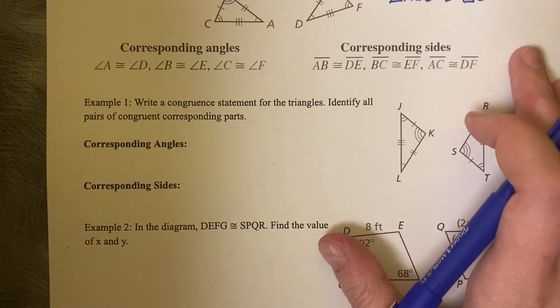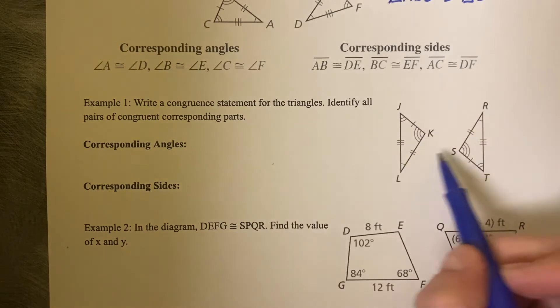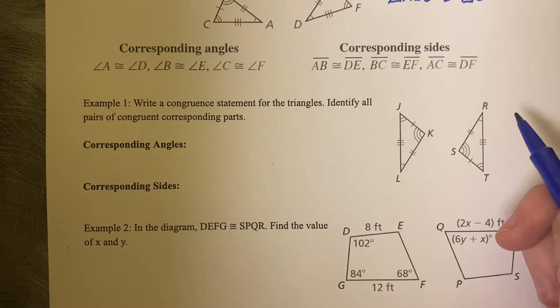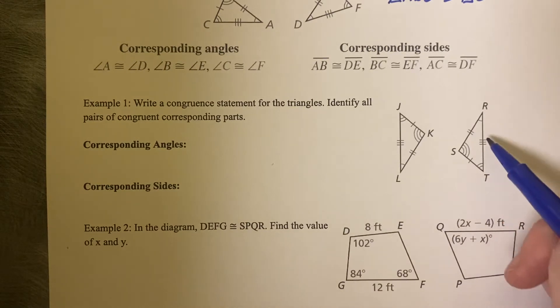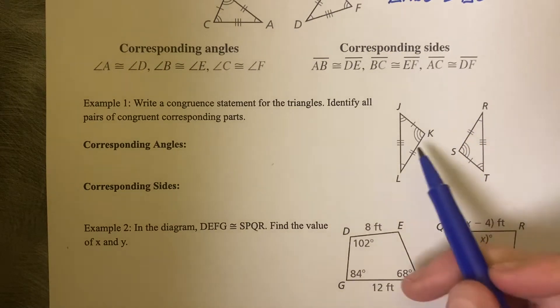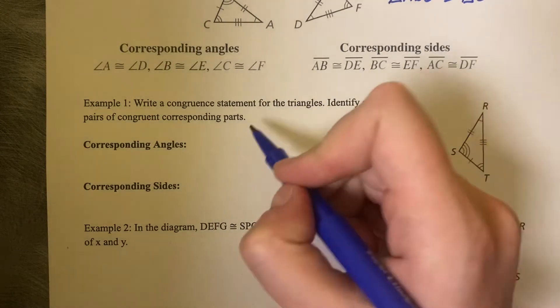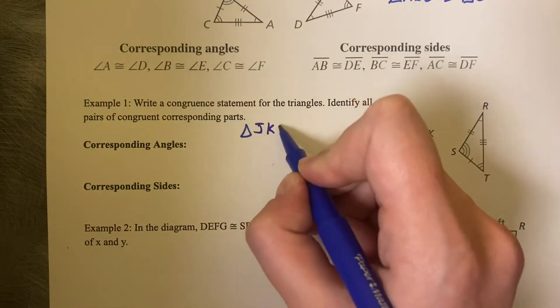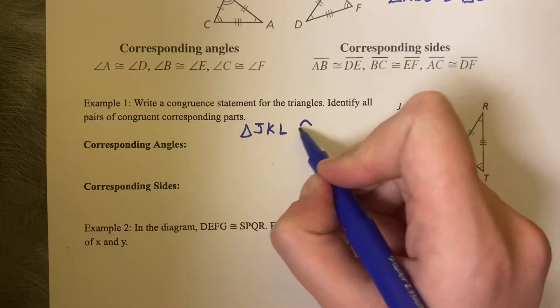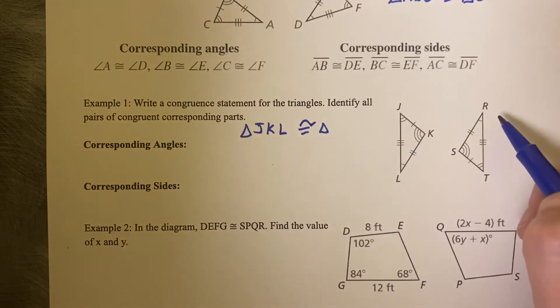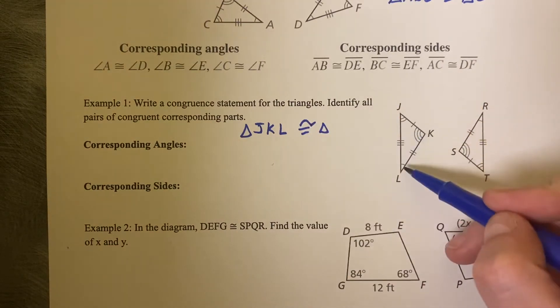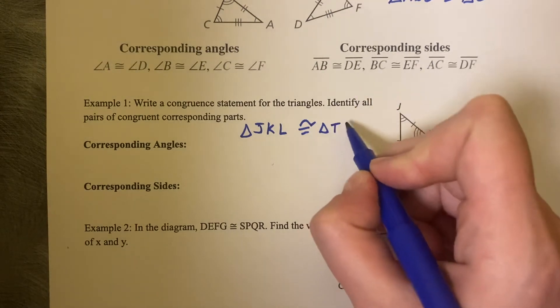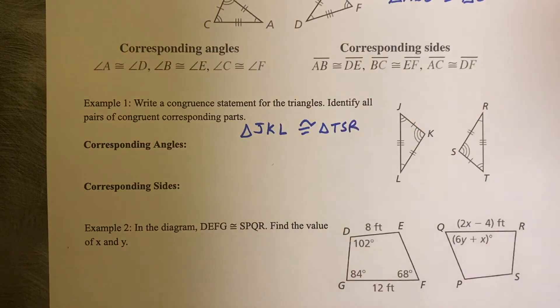Example one, write a congruence statement, just like we just wrote, for the triangles. Identify all the pairs of congruent corresponding parts. So if we want to say that these are congruent, I can see that they're congruent because they have all the same markings and angles. So we can say that triangle JKL is congruent to triangle, got to go the same order, so I went from two to three to one, so same order, two to three to one, TSR. That's a congruence statement.